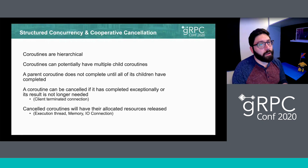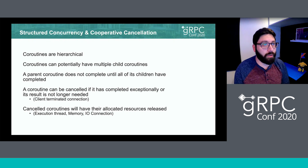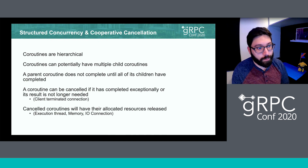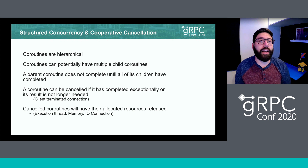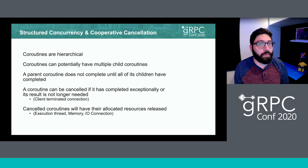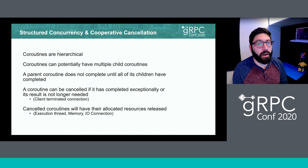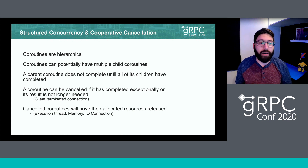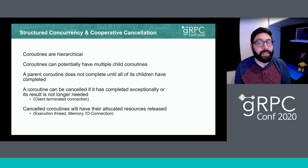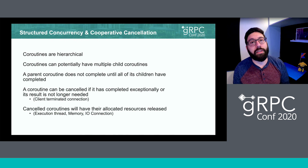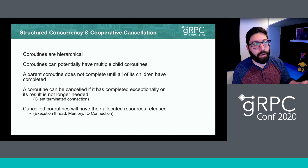Going a little deeper, we're going to look past syntactical differences and dive into the behavior of using coroutines with gRPC — specifically how structured concurrency and cooperative cancellation affect our API implementations. These concepts are first-class citizens in Kotlin coroutines, allowing us to write safer, more efficient concurrent code. At a high level, coroutines are hierarchical: their scopes bear a parent-child relationship with scopes created within them, and we'll see how that plays out when orchestrating multiple API calls. Cooperative cancellation is beneficial because we're able to terminate unnecessary calls early and free up resources.